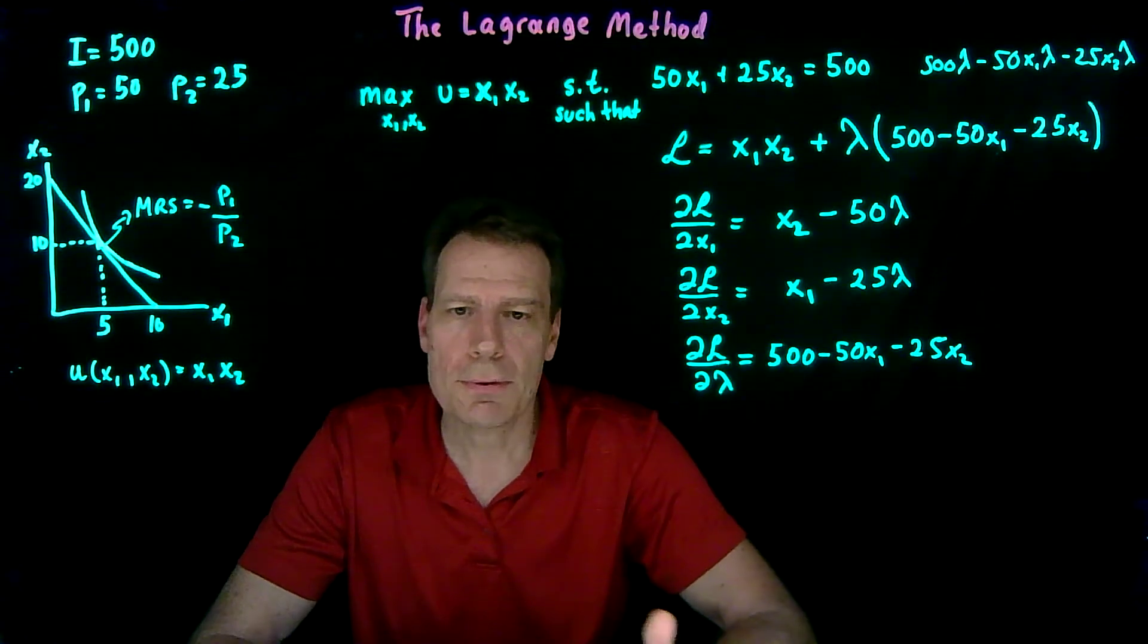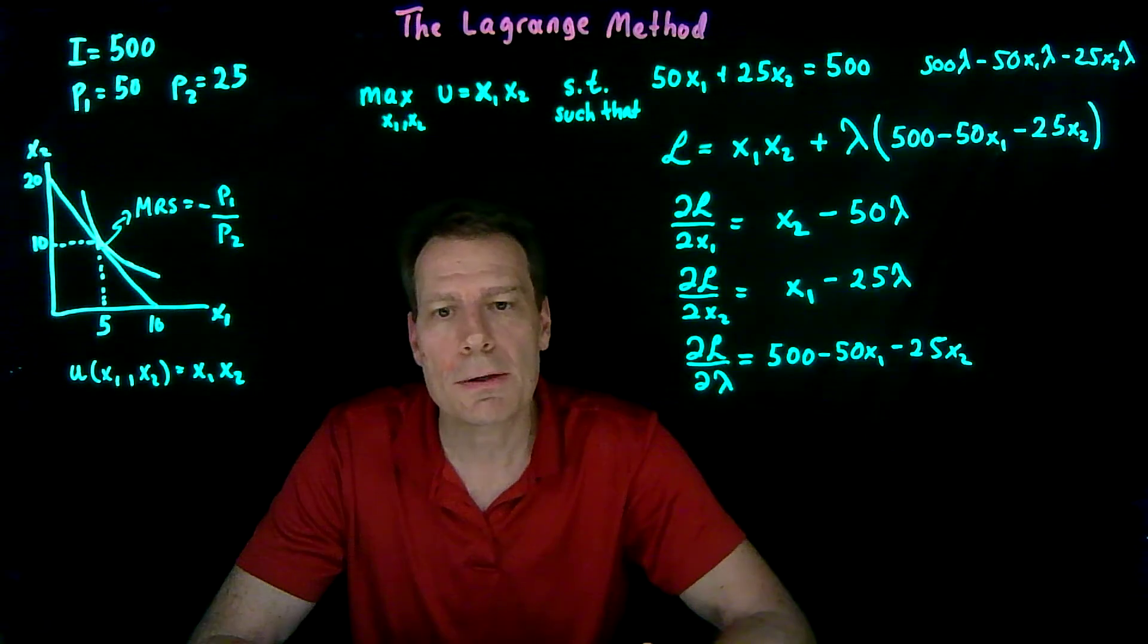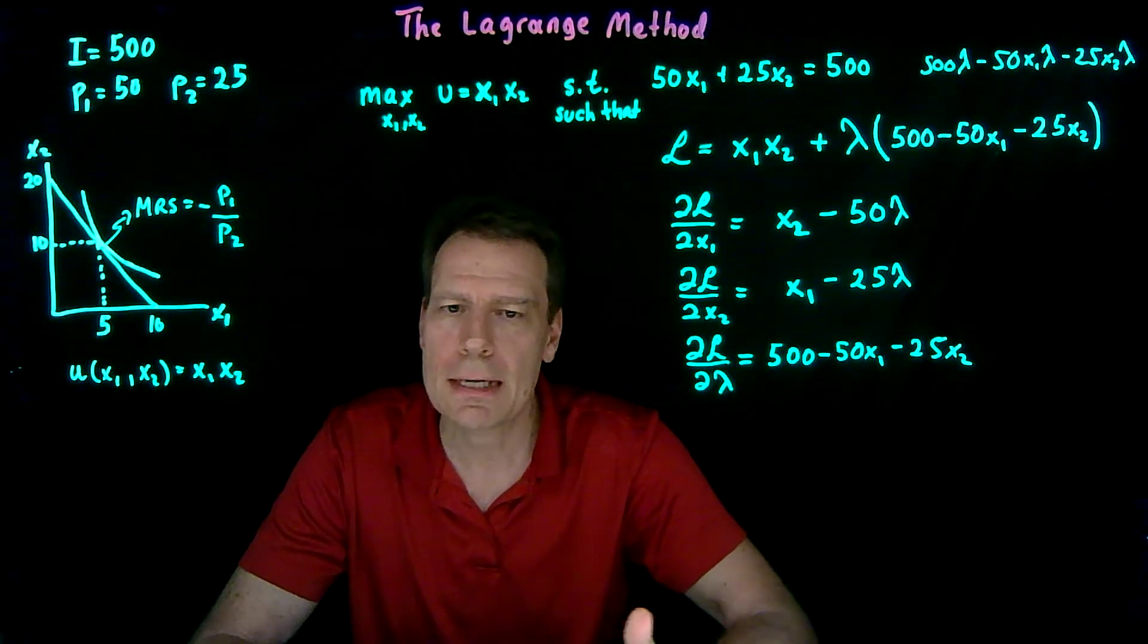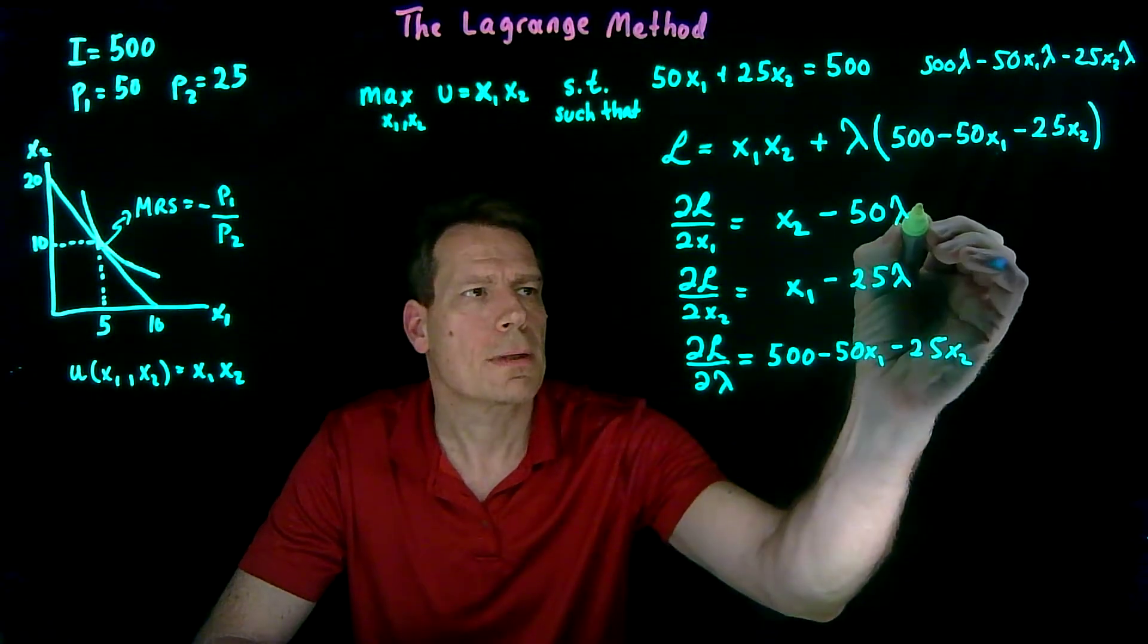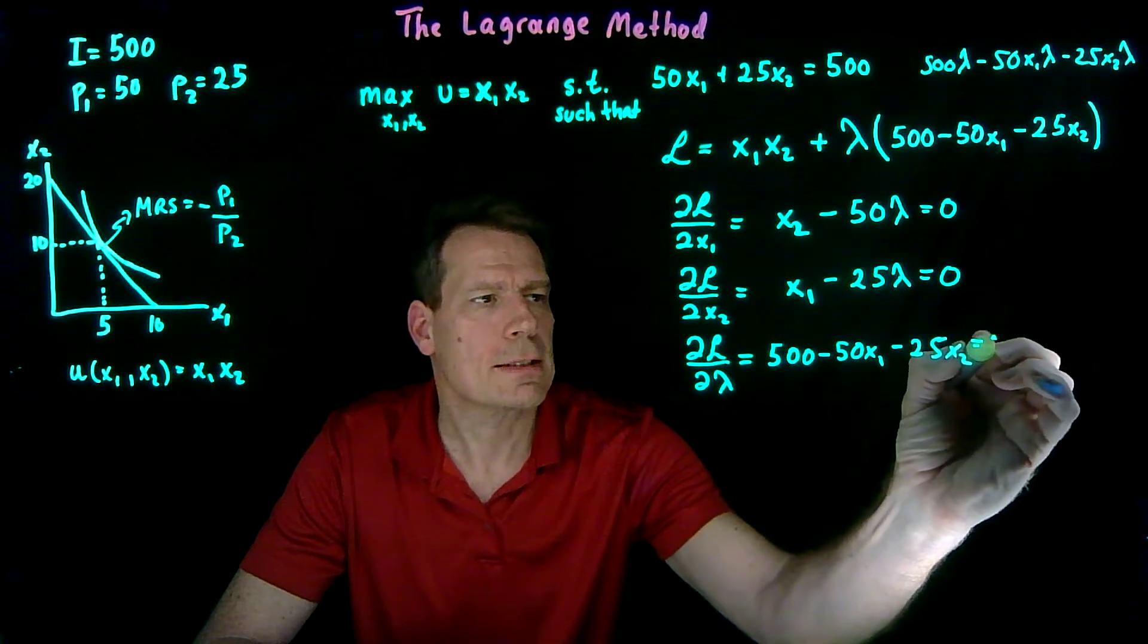And we're going to set those to zero. Again, for the exact same reason we set the derivative equal to zero in the previous way of doing it. It's the same underlying intuition. So that's set to zero, that's set to zero, and that's set to zero.